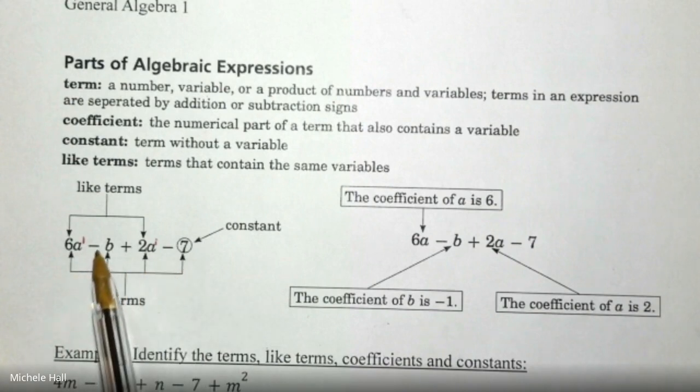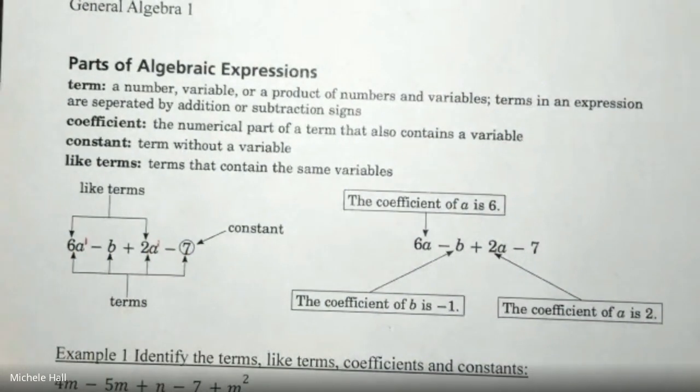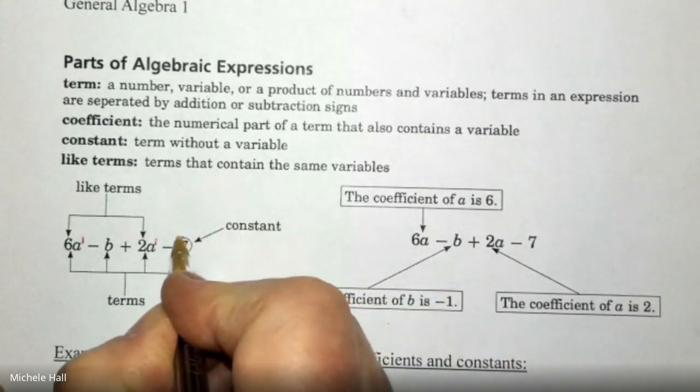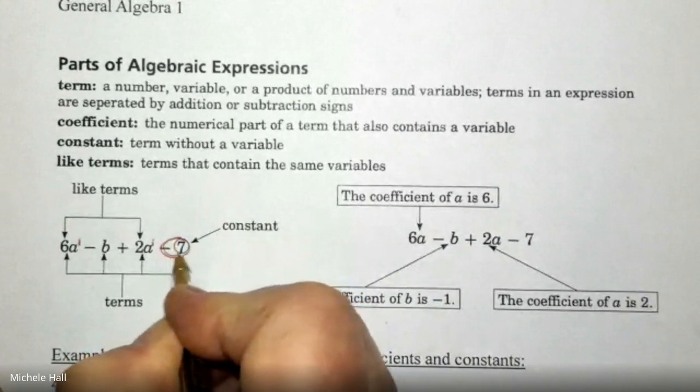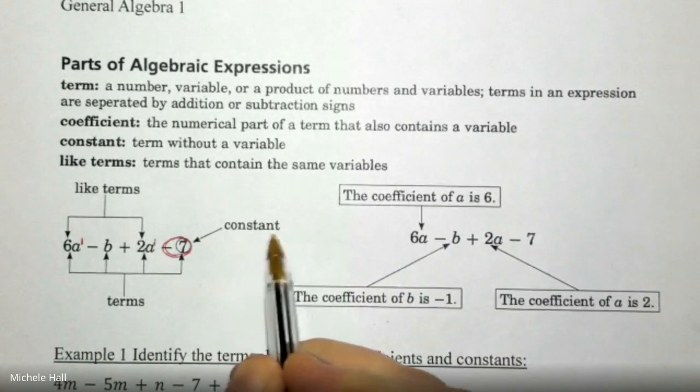Terms are separated by plus and minus signs. So there are 1, 2, 3, 4 terms. We have one term that doesn't have a variable with it. It's just a number. And so the constant is actually negative 7. Remember to keep your signs in front of them. The constant would be negative 7.